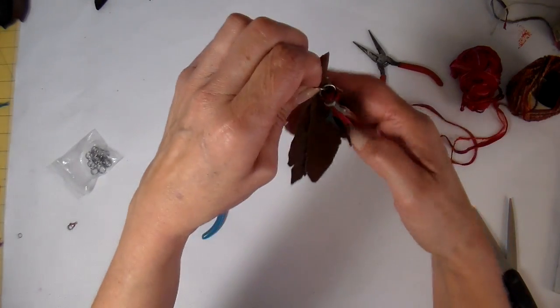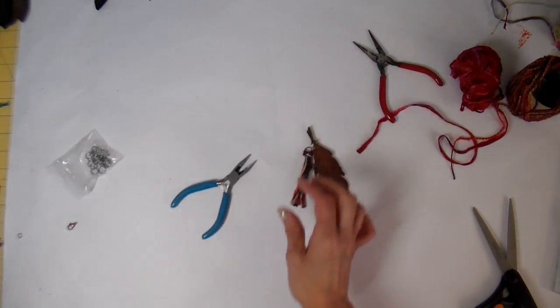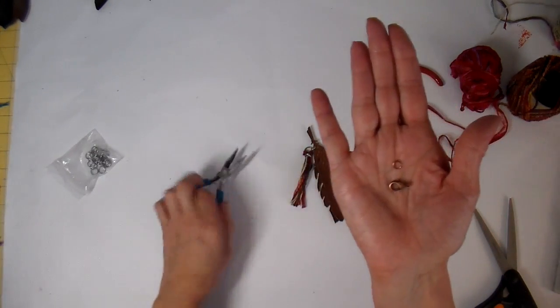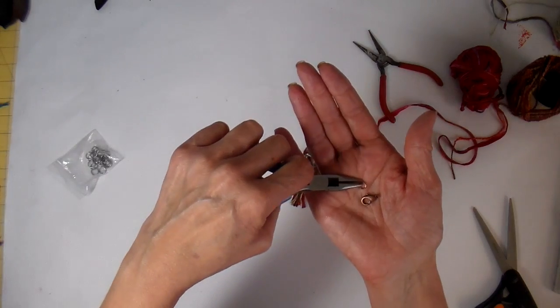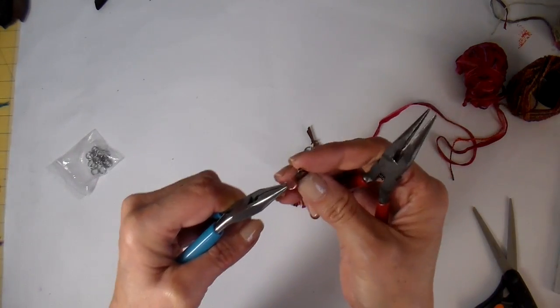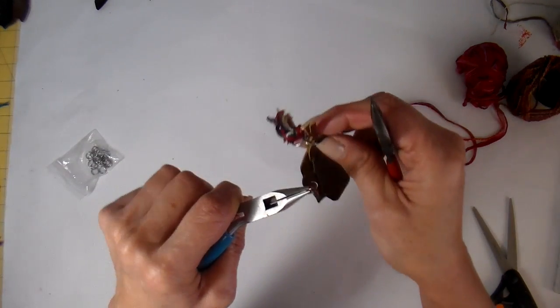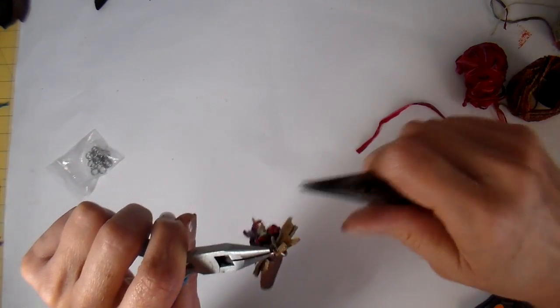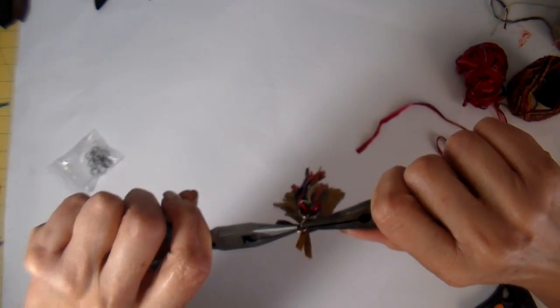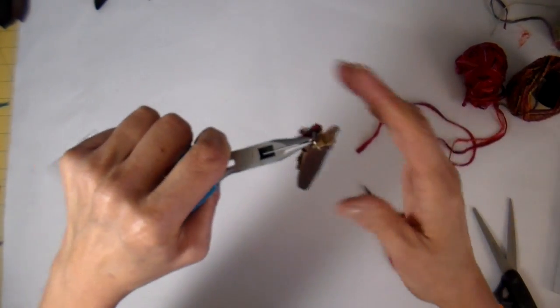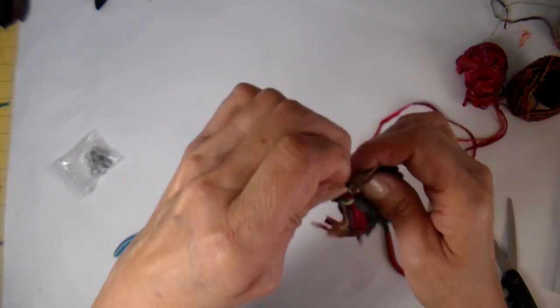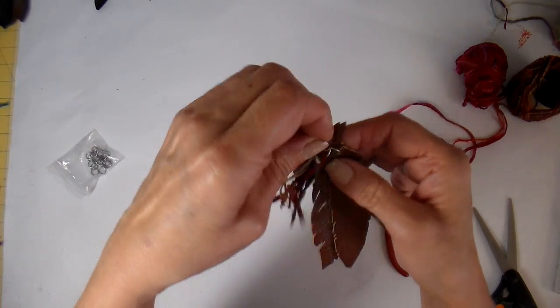The final step on this is just to add the little lobster claw. And I have the lobster claw, I have another smaller jump ring here. And there it is. I just think they're turning out so fun and so cute.